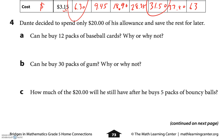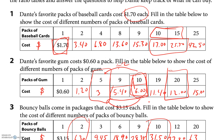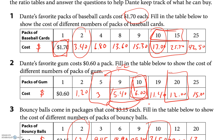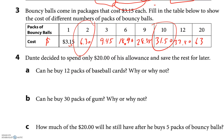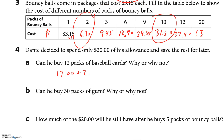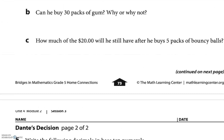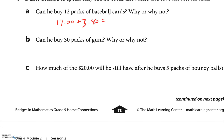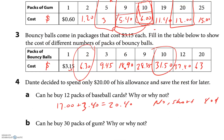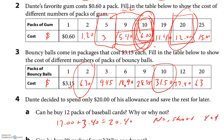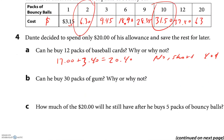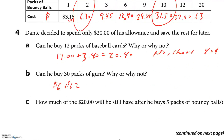Dante decided to spend only $20 of his allowance and save the rest. Can he buy 12 packs of baseball cards? I know 10 is $17.00 and 2 is $3.40 — $17 plus $3.40 is $20.40. No, he can't — he's 40 cents short. Can he buy 30 packs of gum? 10 is $6 and 20 is $12, and $6 plus $12 is $18. Yes — and he has $2 extra.